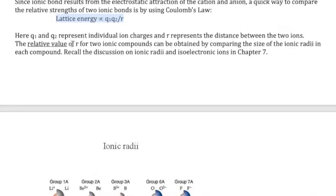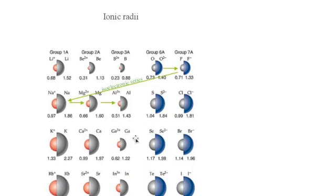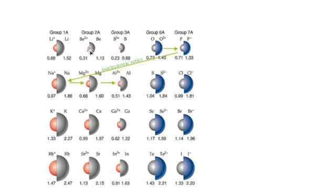For R, we need to look back at the concept of ionic radii from the quantum mechanics chapter: cations become smaller when they form from atoms, and anions become larger. We also have the concept of isoelectronic ions — ions with the same number of electrons — for which it's fairly easy to predict relative sizes.